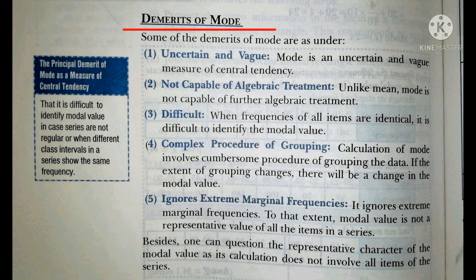Fifth is Ignores Extreme Marginal Frequencies. Mode ignores extreme marginal frequencies, and therefore the modal value is not a representative value of all items in the series. Besides, one can question the representative character of the modal value as its calculation does not involve all items of the series.